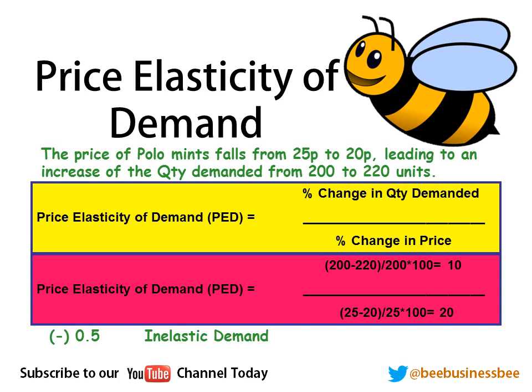Remember, ignore the minus. Because the answer is less than 1, the product is inelastic. If you think about the numbers, you can see it's less responsive — the price went down, but demand went up by a lesser amount. And there's an example of how it's done.